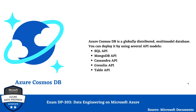Azure Cosmos DB is a globally distributed, multi-model database. You can deploy it using several API models: SQL API, MongoDB API, Cassandra API, Gremlin API, or Table API. Because of its multi-model architecture, you benefit from each model's inherent capabilities — for example, MongoDB for semi-structured data, Cassandra for wide-column, or Gremlin for graph databases. When you move your data from SQL, MongoDB, or Cassandra to Azure Cosmos DB, applications built using those APIs will continue to operate.